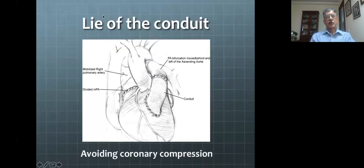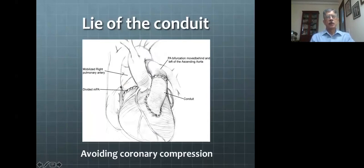In a situation where there is ventricular arterial discordance, the pulmonary artery lies posteriorly and the main pulmonary artery is to the right of the aorta. If you try to put the conduit in this position, it is going to compress the right coronary artery. In this situation, you close off the main pulmonary artery stump, open up the left pulmonary artery, and put a conduit to the left of the ascending aorta, thereby avoiding coronary artery compression.